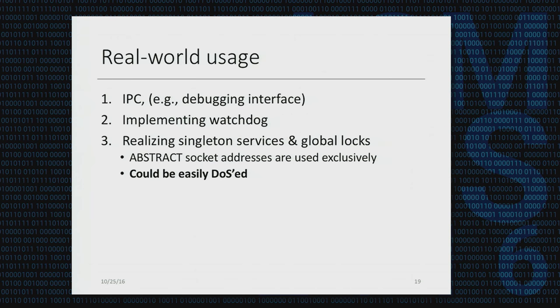The real-world usage of Unix domain sockets in apps is not limited to inter-process communication. They are also being used for implementing a watchdog, where the server and client build a Unix domain socket connection and monitor each other through that channel. Some apps leverage Unix domain sockets to realize single-instance services and global locks, taking advantage of the feature that abstract socket addresses can only be used exclusively — if one app has taken an abstract socket address, no other process can use that address anymore. This feature makes those apps vulnerable to denial of service.